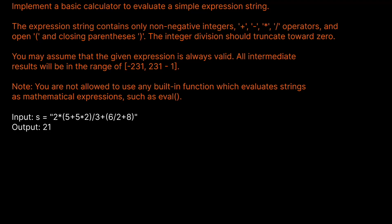Welcome back to the Cracking FAANG YouTube channel. Today we're going to be solving LeetCode problem 772, Basic Calculator 3. Implement a basic calculator to evaluate a simple expression string. The expression string contains only non-negative integers, a plus operator, a minus operator, a multiplication operator, a division operator, and open and closing parentheses. Integer division should truncate towards zero. You may assume the given expression is always valid and all intermediate results will be in the range of -2^31 to 2^31 - 1. You are not allowed to use any built-in function which evaluates strings as mathematical expressions, such as eval.